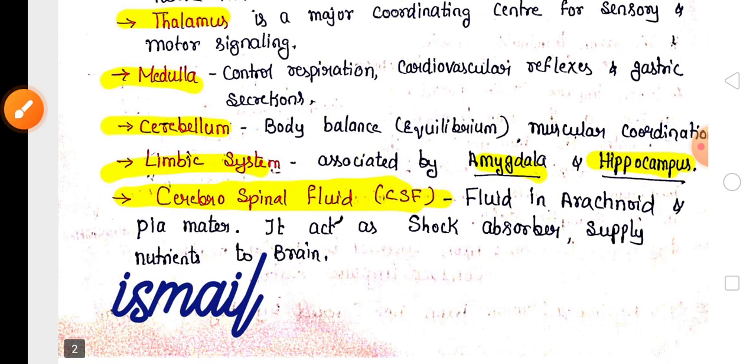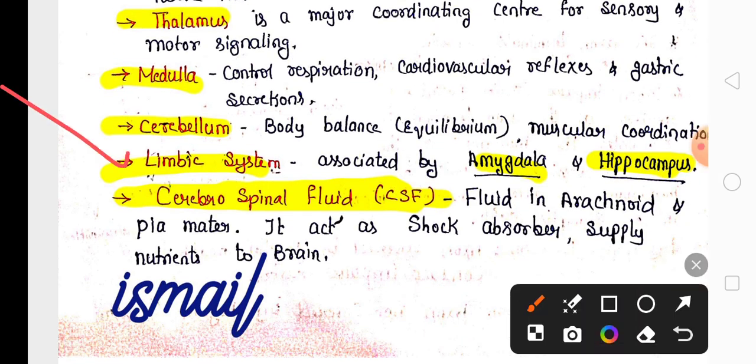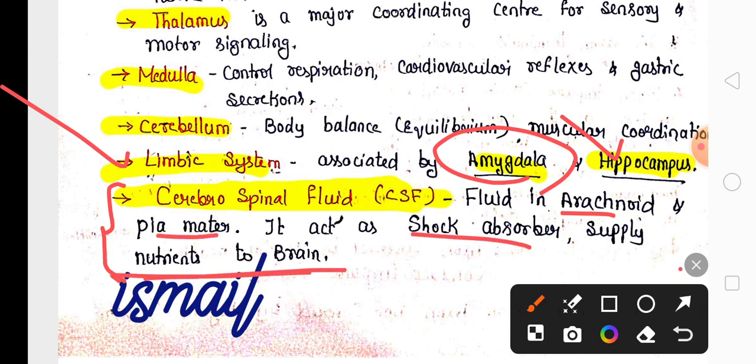Remember the limbic system, which is associated with amygdala and hippocampus. Cerebrospinal fluid is present between arachnoid and Pia Mater of Meninges. It acts as a shock absorber and supplies nutrients to the brain.